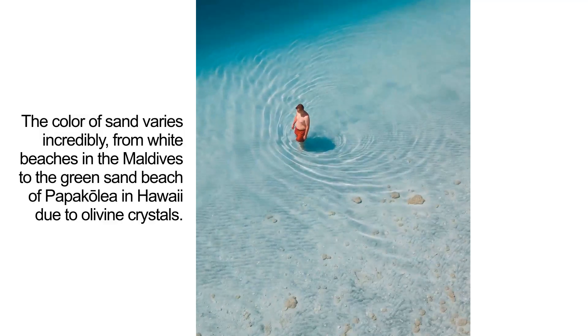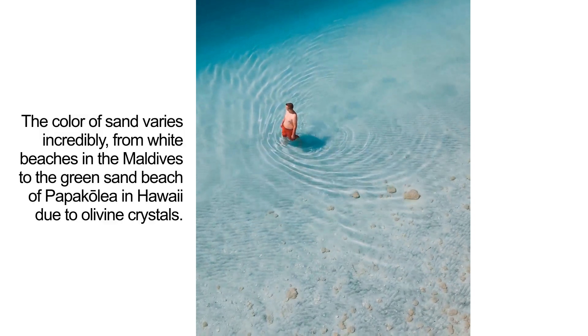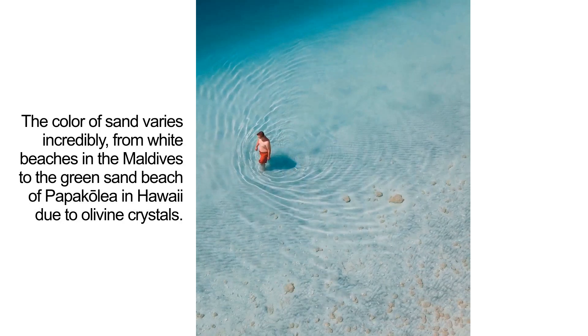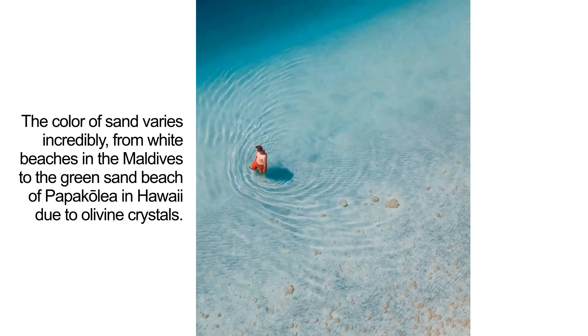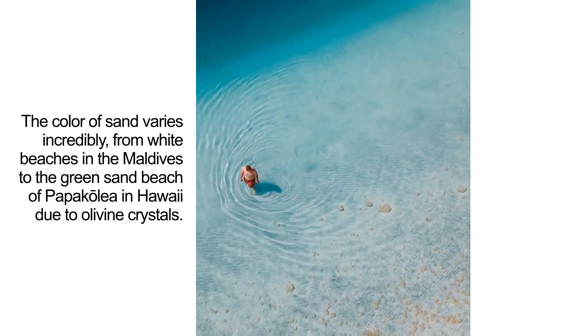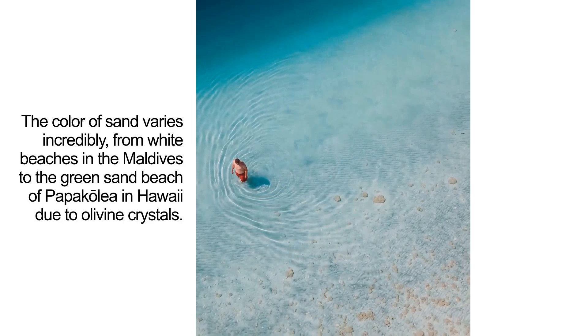The color of sand varies incredibly, from white beaches in the Maldives to the green sand beach of Papakolea in Hawaii, due to olivine crystals.